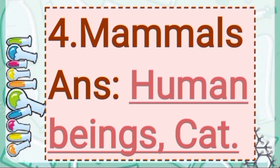Next question: mammals. Human beings along with dog, cat, lion, elephant, cow, buffalo, hippopotamus, zebra, giraffe, monkey, and rabbit are some examples of mammals. Mammals do not lay eggs — they reproduce by giving birth to young ones that feed on their mother's milk. Examples of mammals are human beings and cat.